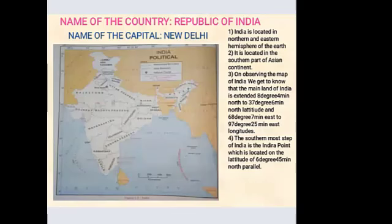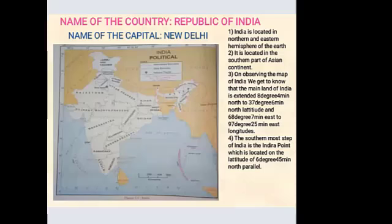We studied that India is located in the northern and eastern hemisphere of the Earth, in the southern part of the Asian continent. The mainland of India extends from 8°4'N to 37°6'N latitude and 68°7'E to 97°25'E longitude. The southernmost tip of India is Indira Point, located at 6°45'N latitude.